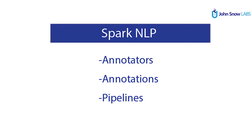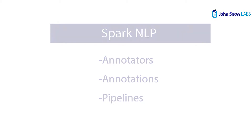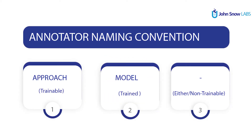Spark NLP has basically a component called annotator. An annotator does something very specific in the NLP context — for example, tokenization, lemmatization, spell-checking, and named-entity recognition. Each annotator in Spark NLP will do something very specific, and there are basically two types of annotators: those that are trainable and those that are already trained.